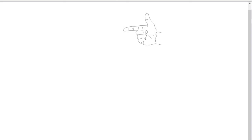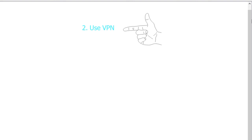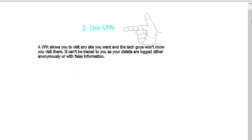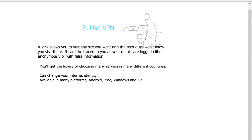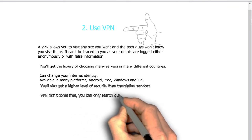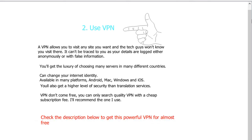Method two: use a VPN. A VPN allows you to visit any site you want and cannot be traced, as your details are logged anonymously or with false information. A VPN creates a secure channel between your computer or phone and the VPN server, so all online activity goes through that channel and third parties can't track it. Your IP address becomes anonymized. VPNs offer higher security and are available on Android, Mac, Windows, and iOS.